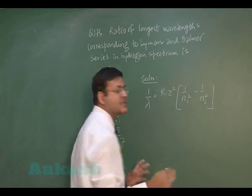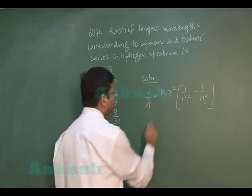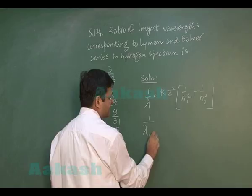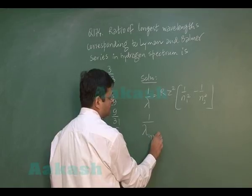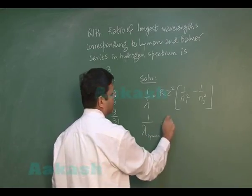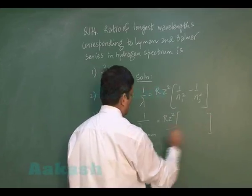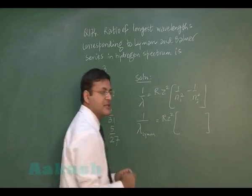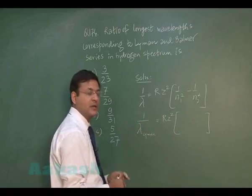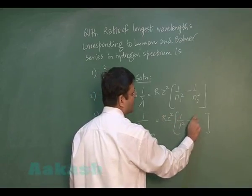Longest wavelength means minimum energy. For the Lyman series, minimum energy corresponds to a jump from n=2 to n=1, so: 1/λ_Lyman = RZ² (1/1² minus 1/2²).